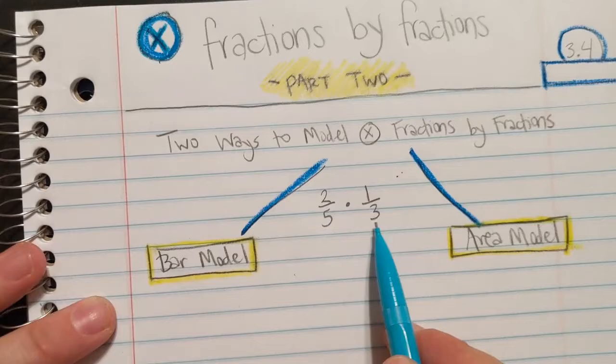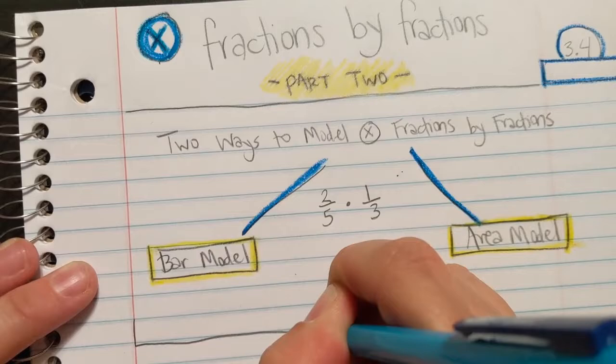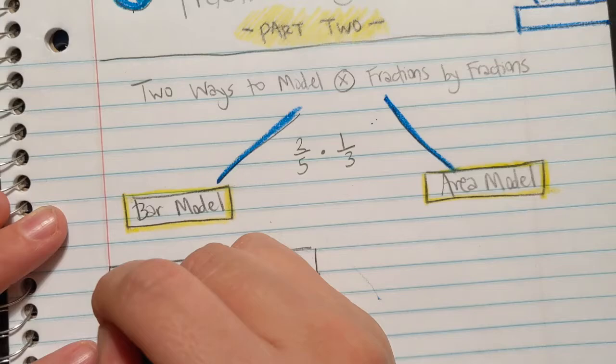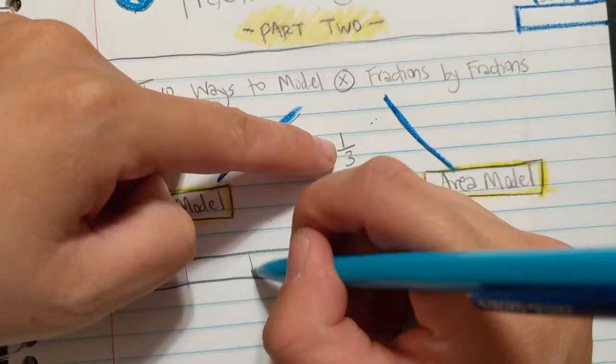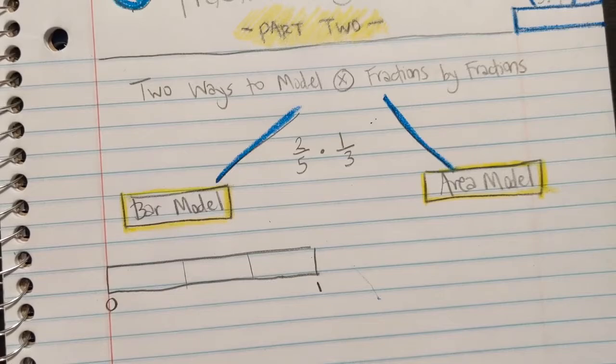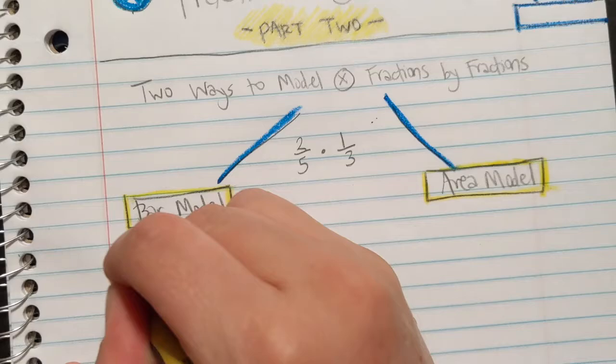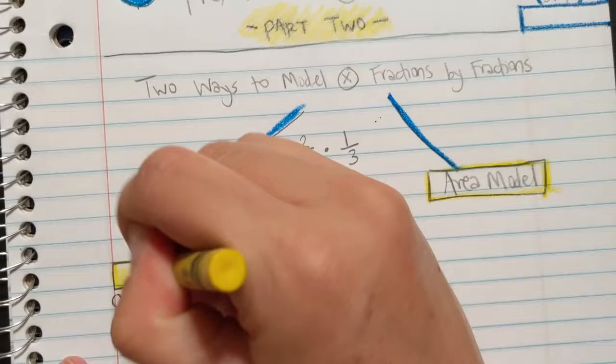The first thing I do is I model the second fraction, one third. So in order to do that with the bar model, I have to draw a bar. I start at zero and I go to one and I have to show a third. So I just show a third. And I'm going to use, let's use yellow. Okay? So we'll use yellow for this one. There is one third. Can you see it? I color it in.